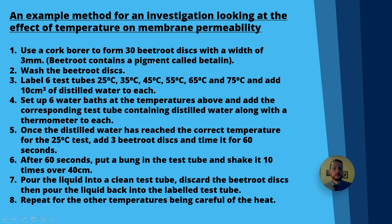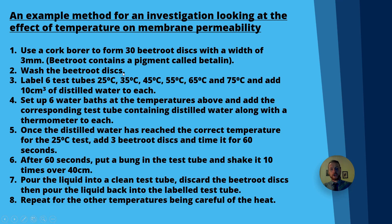Beetroot is packed with a pigment called betalin, which is a dark purple pigment. When that moves out of the cell membrane, you get a really nice dark purple color in the solution. Wash the beetroot discs, pop them in a test tube, give them a few shakes, and siphon off the water to remove any betalin coating the outside of the discs that isn't actually within cell membranes.